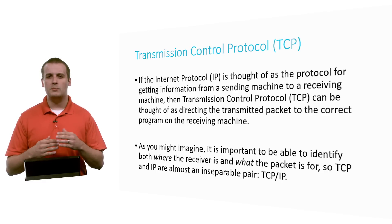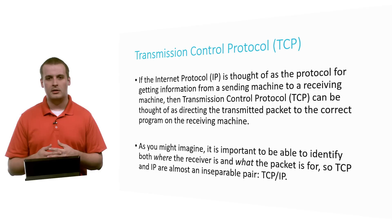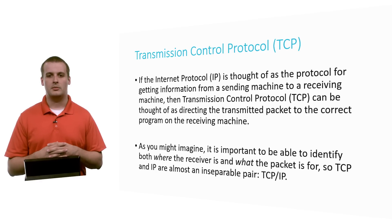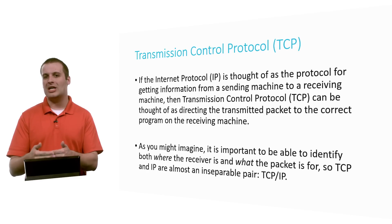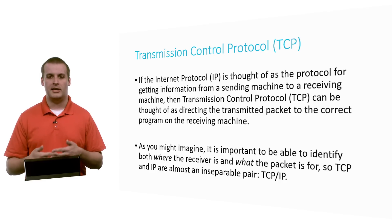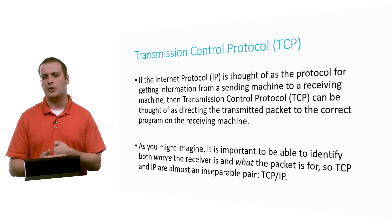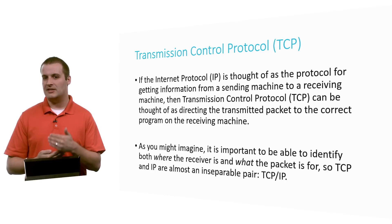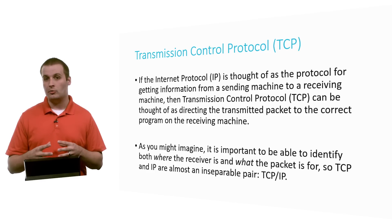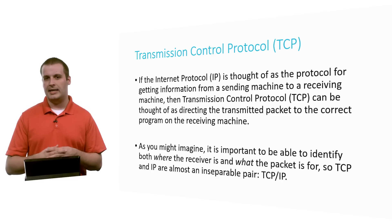So what's TCP? Well, just moving from a sending machine to a receiving machine isn't the full story. Our computers are running multiple programs and have multiple services running on them. So if we want to get a packet or information to a specific program on a specific machine, we need more information than just what IP provides. TCP can be thought of as directing the packet to the correct program or the correct service on the receiving machine. TCP and IP are so interrelated that they're basically treated as a single unit, but they are two separate protocols that do two separate things.